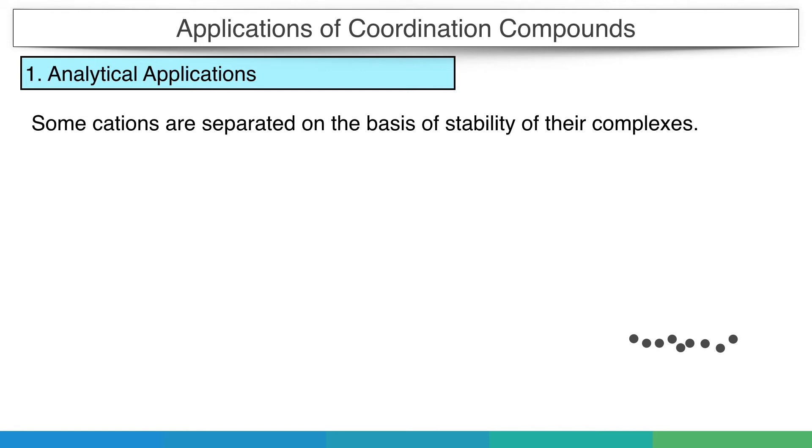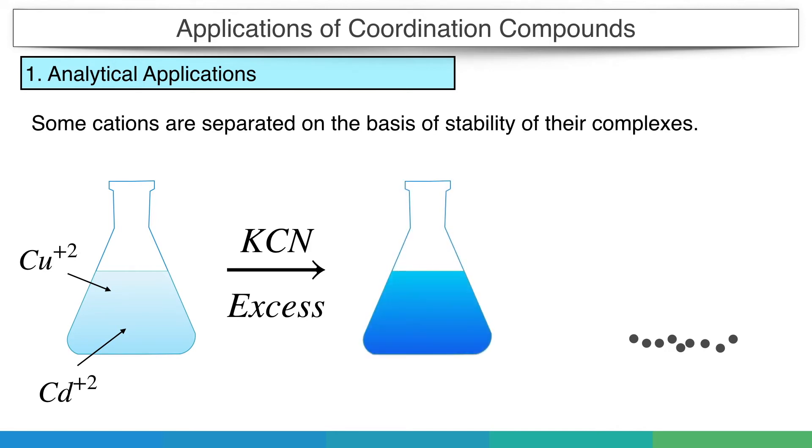For example, if in a solution copper 2+ and cadmium 2+ ions are present, then by addition of excess potassium cyanide, both will form complexes. However, the complex with cadmium is less stable than that of copper. When we pass H2S gas, the cadmium complex breaks and a precipitate of cadmium sulfide is formed, which can be filtered and separated from the solution.